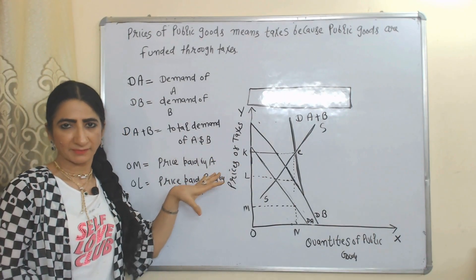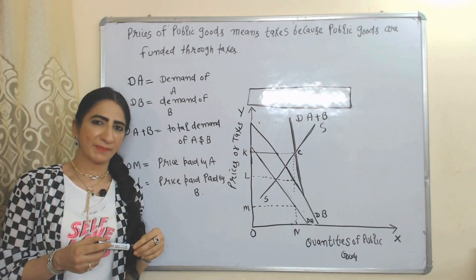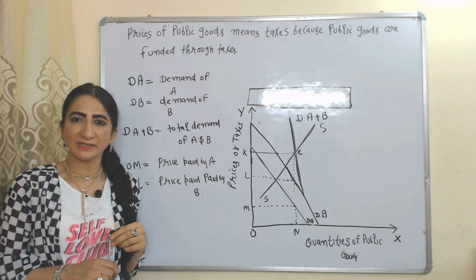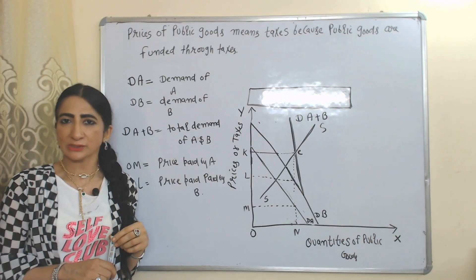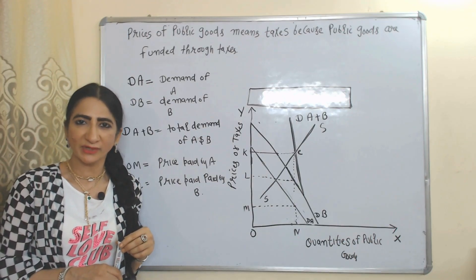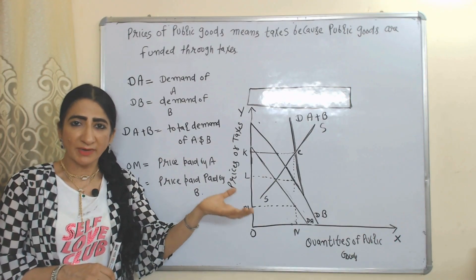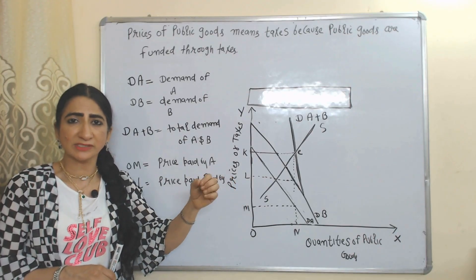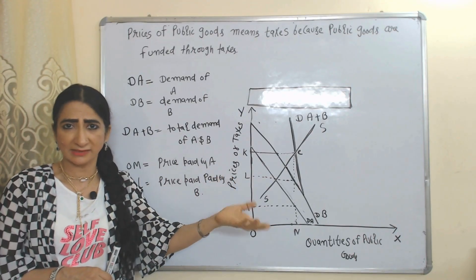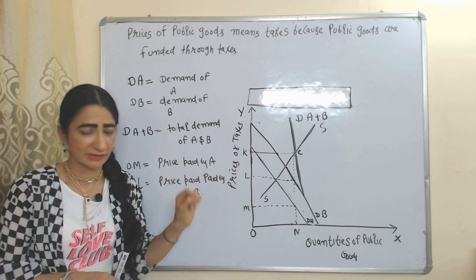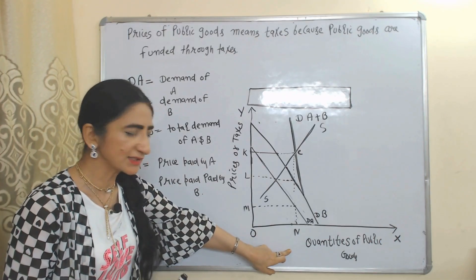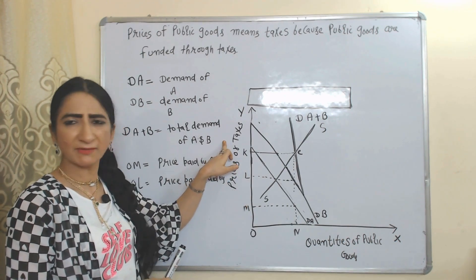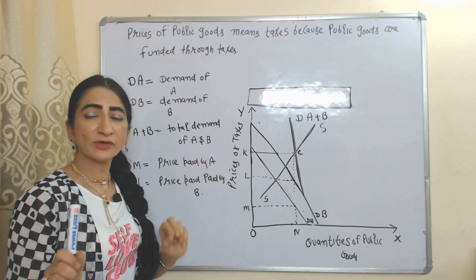Now we will see the diagram. Taxes can be prices of public goods because public goods are funded through taxes — taxes are income of the government, and through this income the government provides public goods. On the x-axis we have quantities of public goods, and on the y-axis we have prices, or we can say taxes.